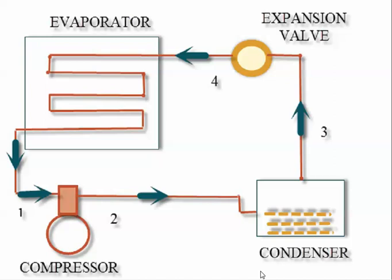When the refrigerant changes its phase from liquid to vapor by absorbing the latent heat from the cold chamber, this process is known as evaporation, and it produces the refrigeration effect inside the cold chamber. When the refrigerant changes its phase from vapor to liquid by rejecting heat, this process is known as condensation.